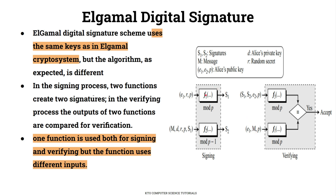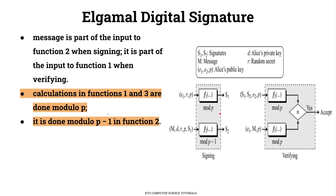One function is used for both signing and verification, but the function uses different inputs. We can get the same input to the message in each case.